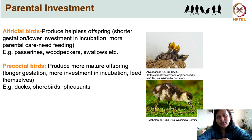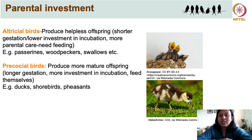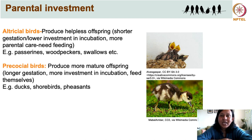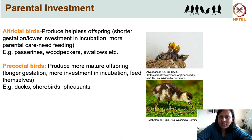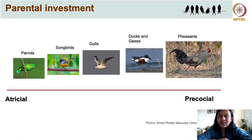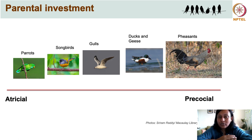On the other hand, precocial birds produce more mature offspring — bigger and not so helpless — but this requires a longer incubation period and much more investment in incubating the eggs. Once the chicks hatch, they are able to feed themselves almost immediately. Examples of precocial birds include ducks and pheasants. A representation of different large groups of birds along this continuum from altricial to precocial shows parrots and songbirds at the altricial end, gulls lying somewhere in between, and ducks and pheasants at the precocial end.